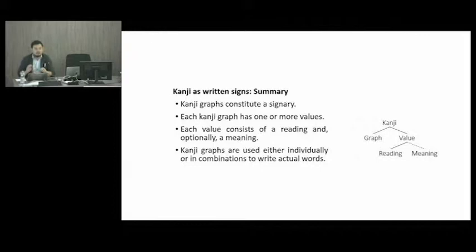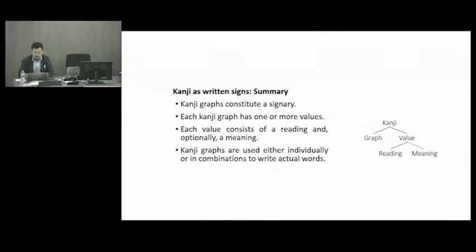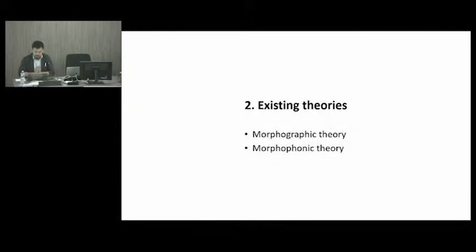Importantly, from a linguistic viewpoint, the terms reading and meaning that I have been using don't tell much about the values associated with individual kanji graphs. It is necessary to describe those values in terms of particular linguistic entities, so that we can clearly see what type of written signs kanji graphs constitute. This is the main topic. And as I mentioned earlier, there are two theories: the first is morphographic, and the second is morphophonic.